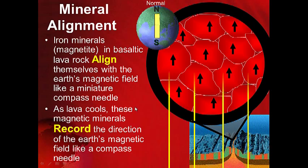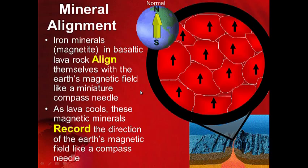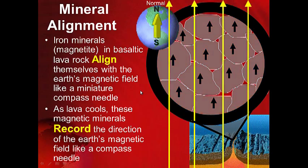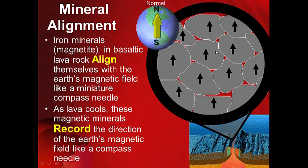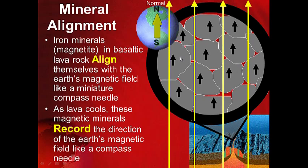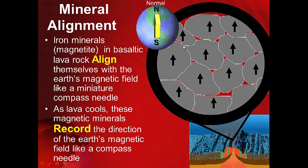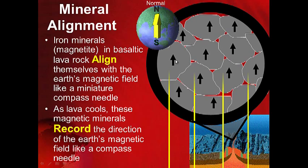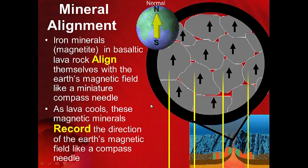As lava cools, these magnetic minerals record the direction of the earth's magnetic field like a compass needle. Then the lava cools into rock and that direction is locked in. So once that lava cools, it records the earth's magnetic field at the time in which it formed or cooled.